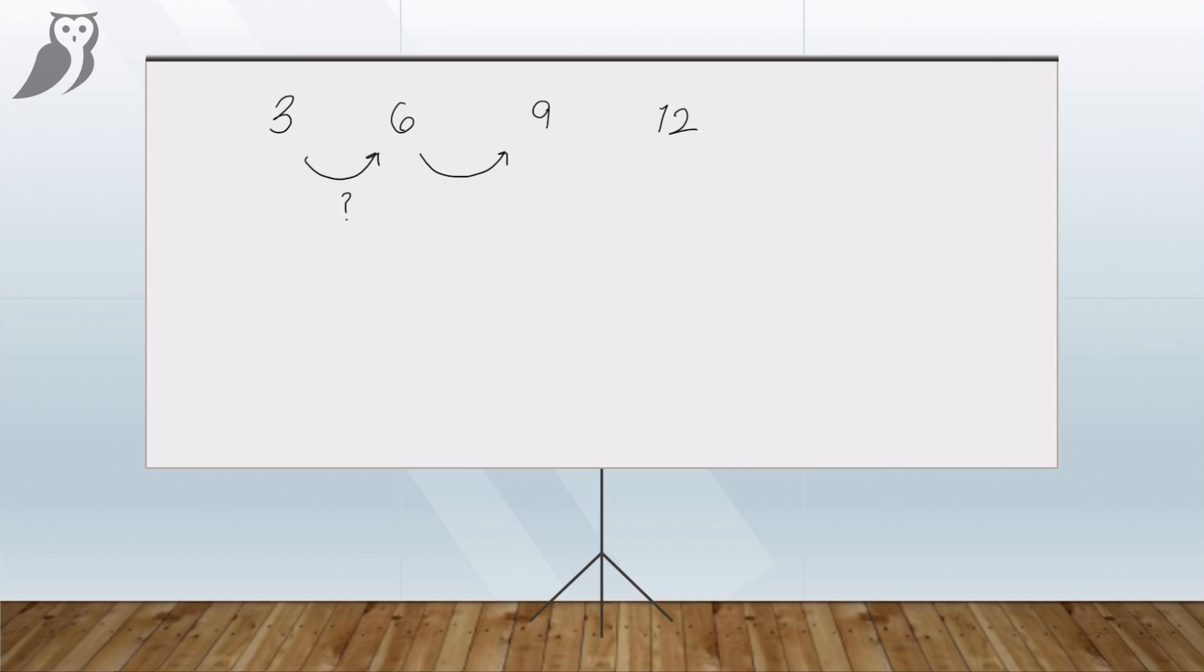Sometimes there are more than one way to get from number one to number two. So always check your answer applies to all the numbers. In this case, we can get from three to six by either multiplying by two or we can also add three to three to give us six. So we have identified two patterns. This is either multiply by two or add three.